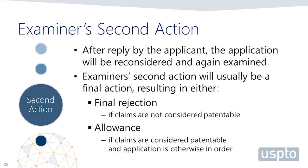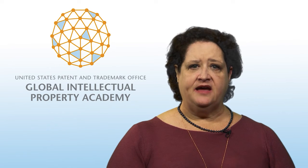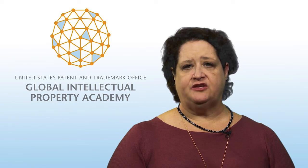Does an inventor have any options after receiving a final rejection? The answer is yes. After receiving a final rejection, the inventor has the option to appeal the examiner's decision to the Patent Trial and Appeal Board, or PTAB, for further review. The inventor also has the option to file a request for continued examination, or RCE, to begin another round of examination where the inventor can introduce additional claim amendments or arguments. And finally, if the inventor does not respond to the final rejection, the patent application will be abandoned and no further action will be taken on it by the USPTO.